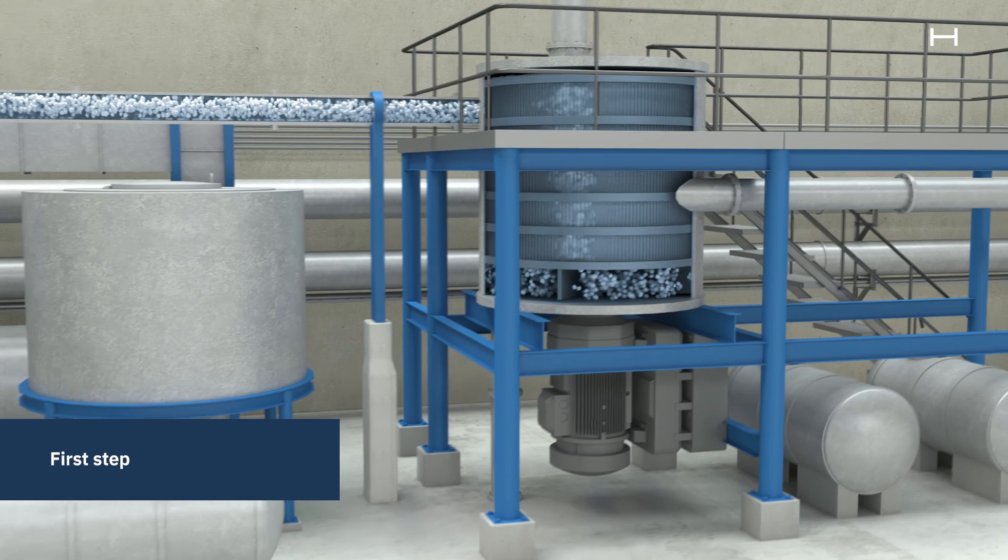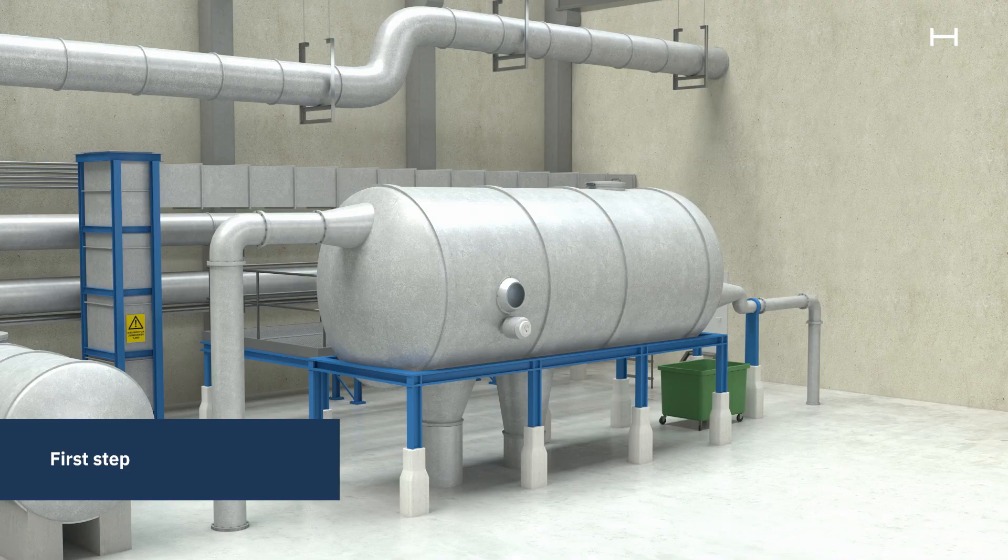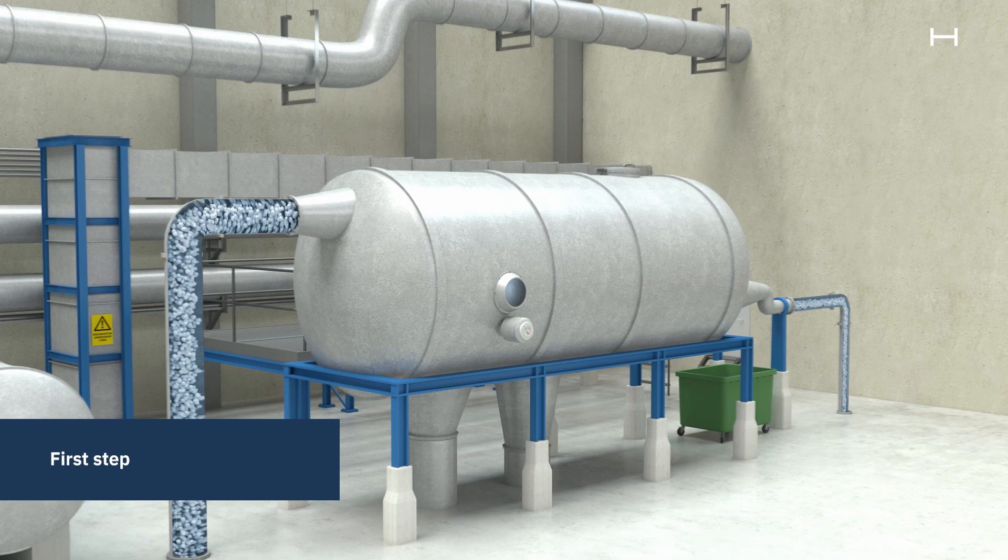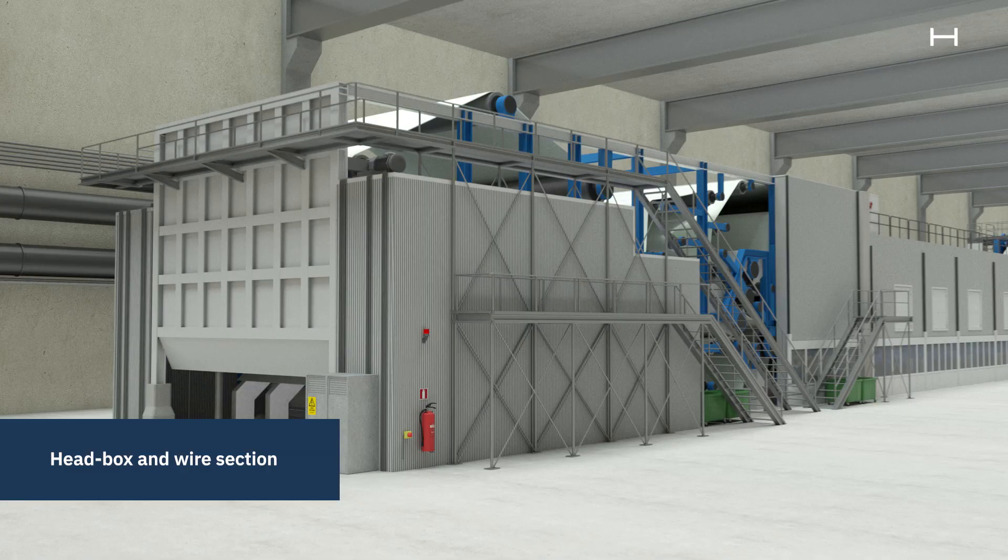When the pulp has been prepared in the TMP line, it has been finalized with chemicals and fillers according to the recipe and is screened for the last time. The pulp is then diluted with water and pumped into a de-aerator to separate air bubbles in the pulp. Now the pulp is ready to be transformed to paper in the paper machine.